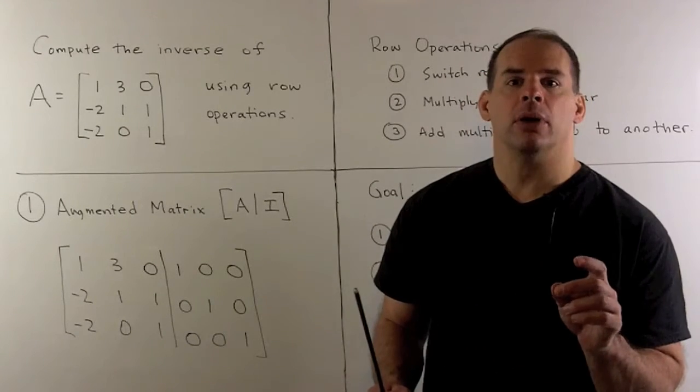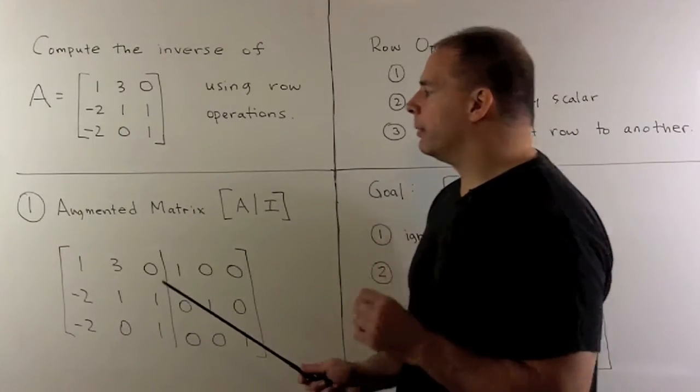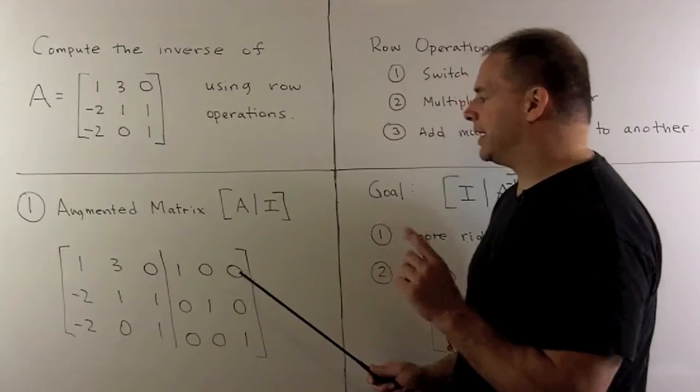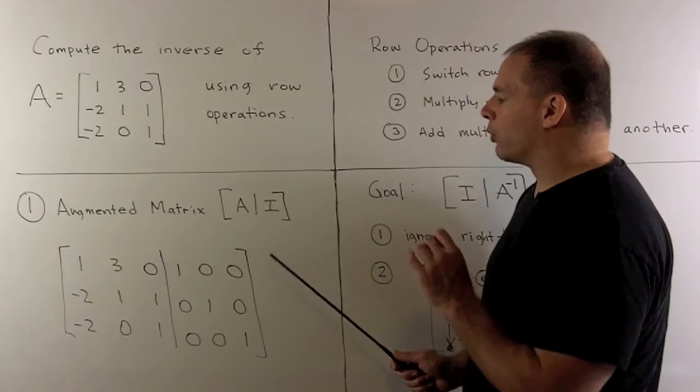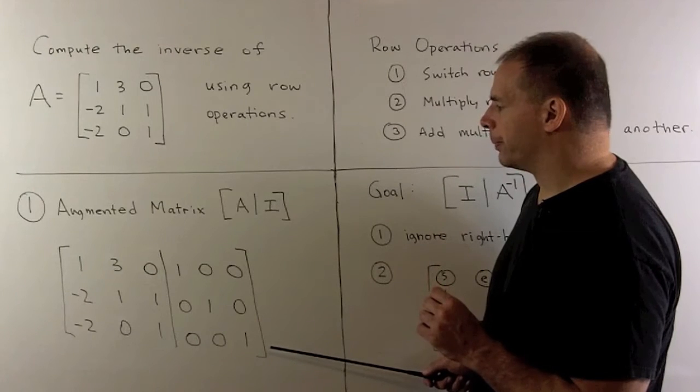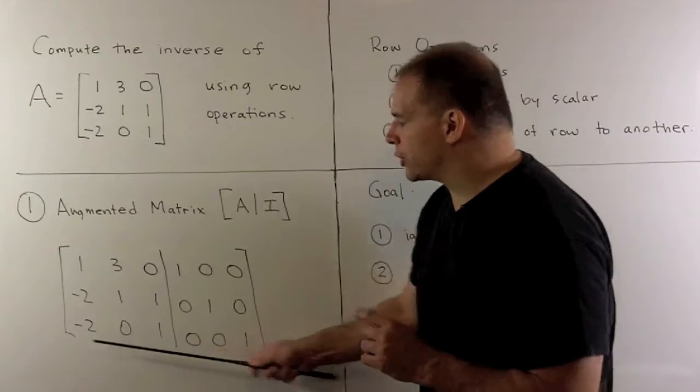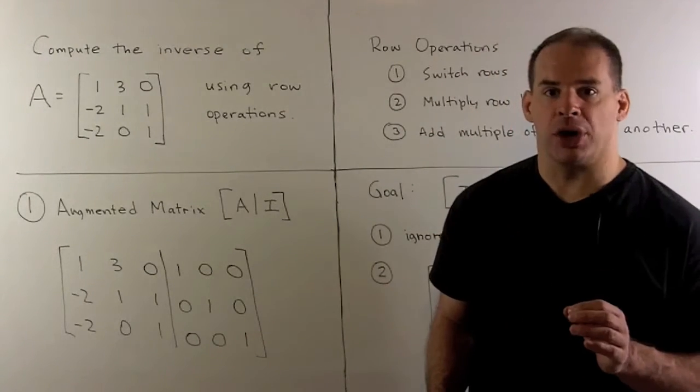Now, the way we start, we're going to form the augmented matrix given by taking A. We're going to augment it on the right by the 3 by 3 identity matrix. So, this is going to be the matrix we perform row operations on.